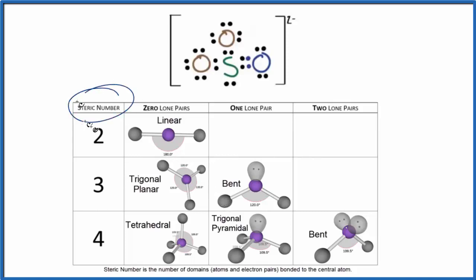We want to figure out the steric number. The steric number, that's the number of things that are around the central atom, the central sulfur. So we have an oxygen, one, two, three oxygens, and then we have a lone pair. So we have a steric number of four.